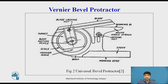The blade can be moved along its entire length and can also be reversed. Its ends are beveled at angles of 45 degrees and 60 degrees. The acute angle attachment can be readily fitted into the body and clamped in any position. Bevel protectors are tested for flatness, squareness, parallelism, straightness, etc.